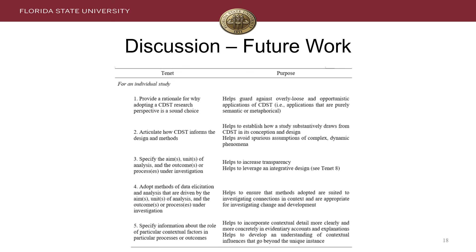To conclude, we'd like to synthesize the methodological lessons we got from this review — we refer to them here as tenets. The table on this slide and the next synthesize these tenets in relation to an individual study or a program of research. For individual studies informed by complexity theory, our systematic review suggests that studies should provide a rationale for adopting complexity theory in the first place. They should articulate how complexity theory informs the design and methods, specify the aims, units of analysis, and the outcomes or processes under investigation. Forms should follow function — adopting methods of data elicitation and analysis driven by those aims and units. Finally, studies should specify the role of particular contextual factors in the processes under investigation.